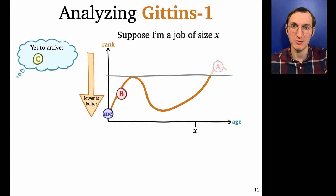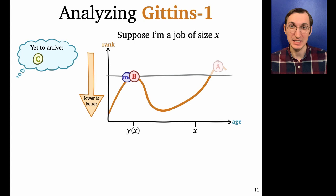All right, what about B? Well, it turns out I am going to have to wait for B some of the time. So at the start, I have priority over B. But then we tie. And actually, this is a sort of unstable tie. Whenever one of us gets served for an instant, the other has better rank. And so the server actually keeps switching between me and B and ends up serving us both in a sharing style up until the peak of this rank function at an age we'll call Y of X.